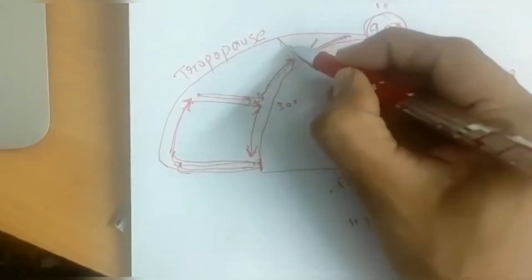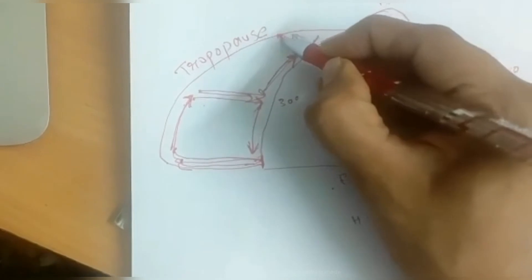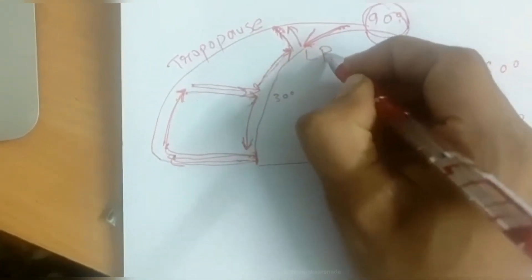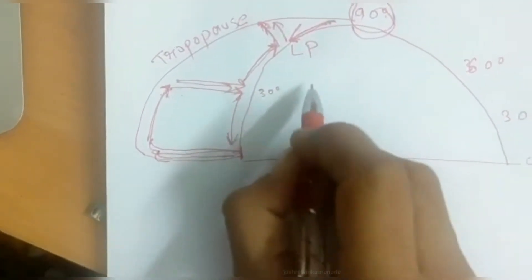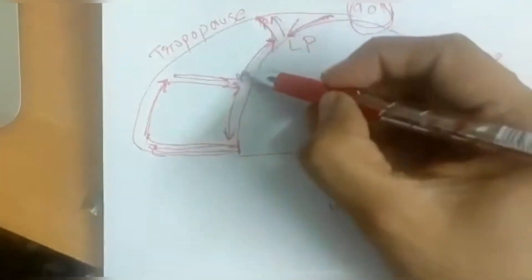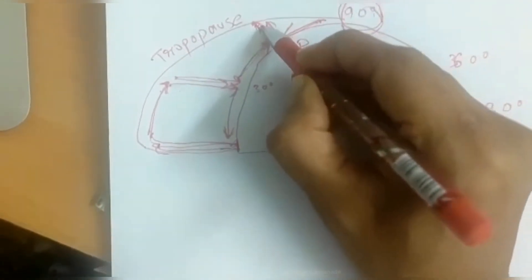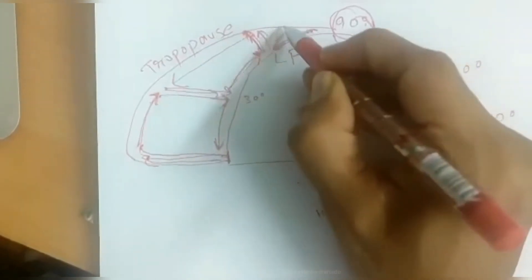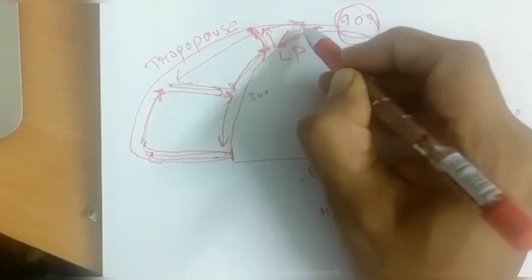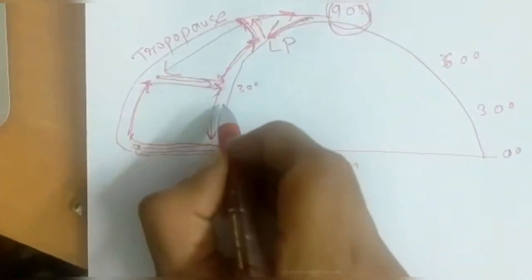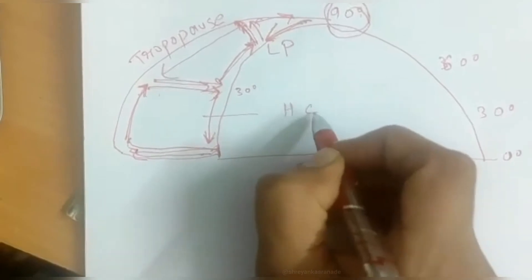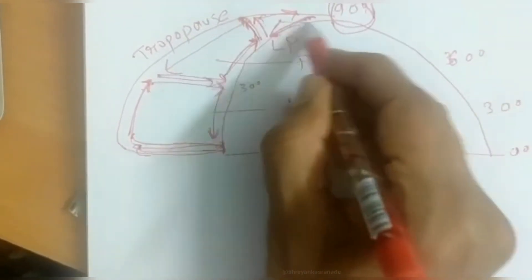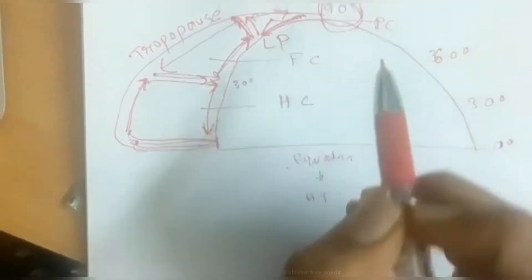Because they are mixing, the air will rise up here, and where the air is rising, a low pressure belt is formed. The air has risen and is again moving along the tropopause, completing two cells. So this becomes your Hadley cell, this becomes your Ferrel cell, and this becomes your polar cell.